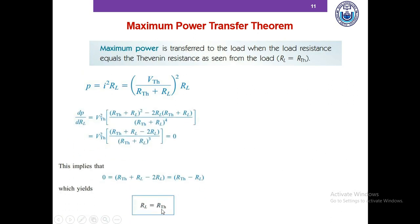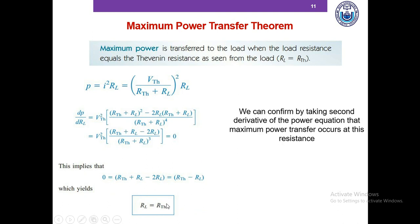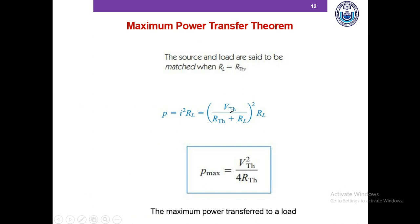When RL equals the Thevenin resistance of the rest of the network, the power delivered to the load is maximum. We confirm this is a maxima by taking the second derivative of the power equation with respect to RL, which is negative — confirming a maximum. Substituting RL equals RTH into the equation, the maximum power Pmax equals VTH² divided by 4RTH. This is the maximum power you can deliver to a load.